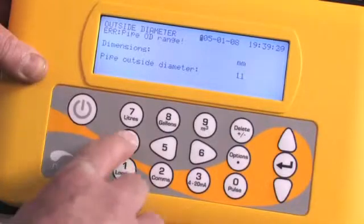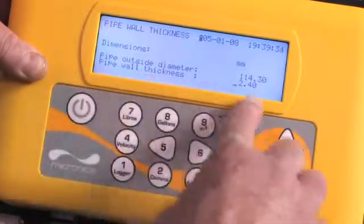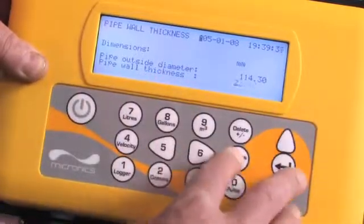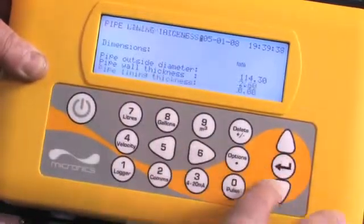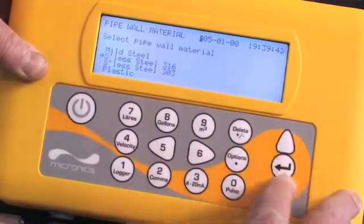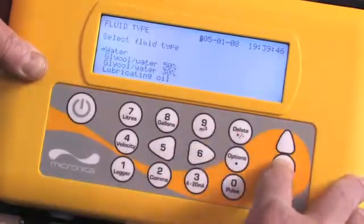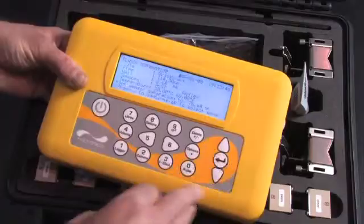Enter the outside diameter of the pipe, then enter the pipe wall thickness, the pipe lining thickness if appropriate, the pipe material, the type of fluid, and the temperature. With all the data entered,